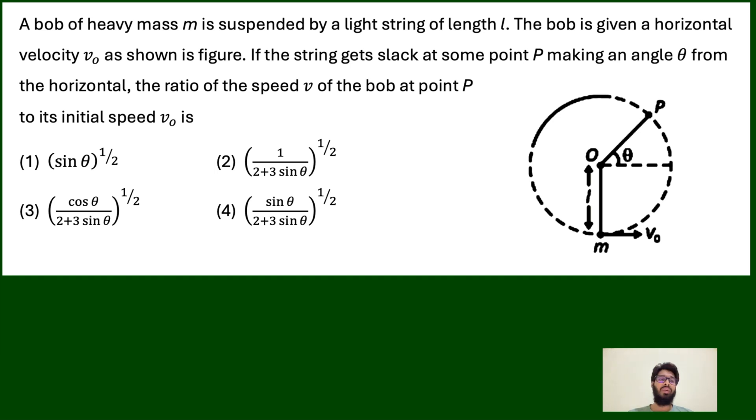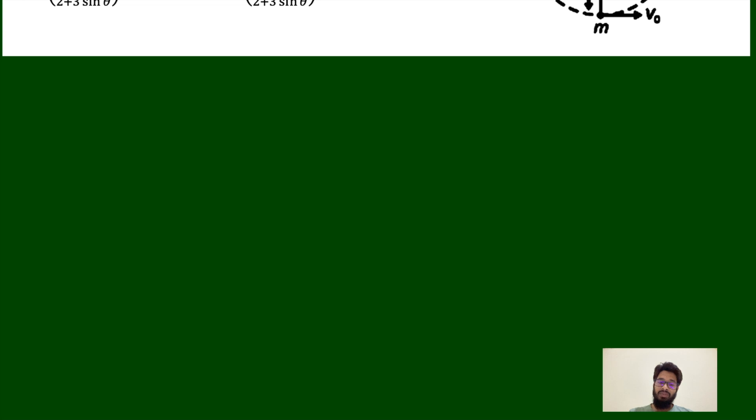The ratio of the speed v of the bob at point P to its initial speed V0 is what we have to calculate. First of all, we will see here and calculate the ratio.